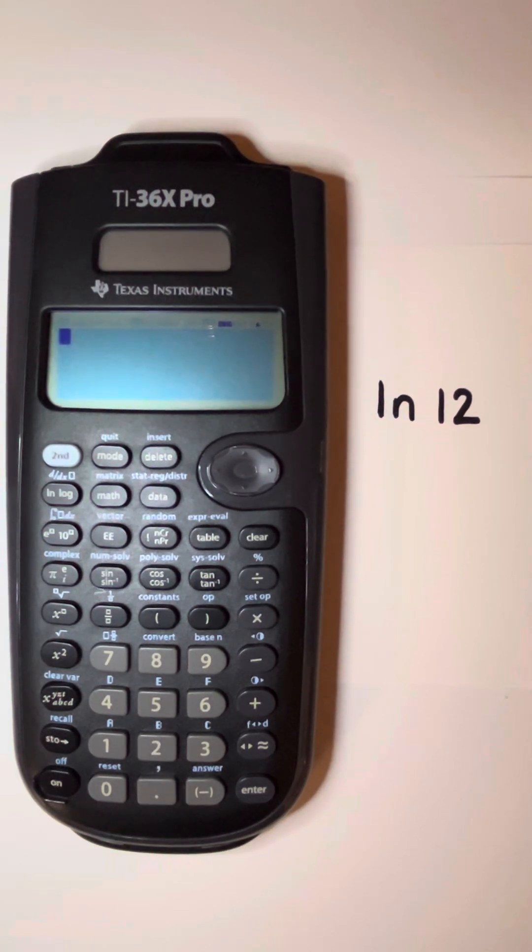To start, let's talk about natural logs. Natural logs are logs with an understood base of E, and they're written as LN. So in this example, we have the natural log of 12. As you see, it's LN of 12. We don't see the base of E. It's not written there.